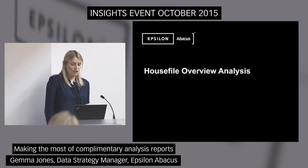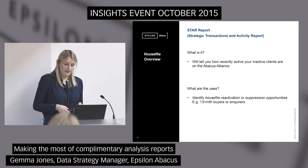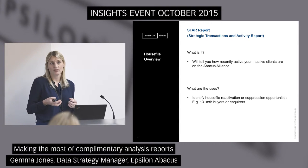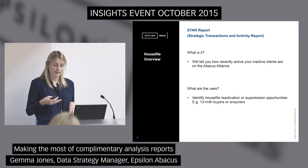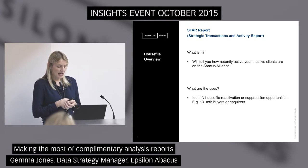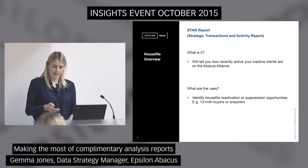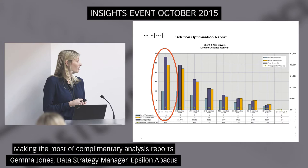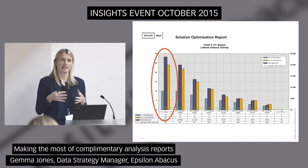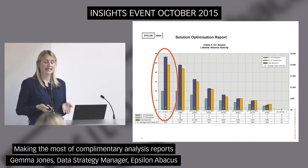Our house file overview can show you how we can add value to different parts of your house file. With the STAR report, if you feel there are areas of your house file that you could be doing more with, we can show you the level of activity we have on the Alliance for those inactive or inquiry pockets of data. You may not see much opportunity in very old lapsed house file data, but before you spend money on reactivation, we can show you the STAR report to show you where that money is best spent. In this STAR report example, this is a client's 13-plus month inactive buyers. Inactive means different things for different people, but what you can see here is how very active they still are on the Alliance, particularly within the last month.